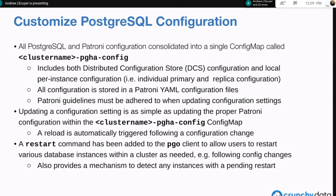For quite some time, the operator has provided the ability when initially bootstrapping your cluster to provide a set of custom configuration files as the initial baseline configuration. That's done using a config map and some built-in flags. That process hasn't changed — you still bootstrap and create your clusters like you always have, including how you apply custom configuration. What has changed is how you modify and tweak your Postgres and Patroni configuration settings once your cluster is up and running.